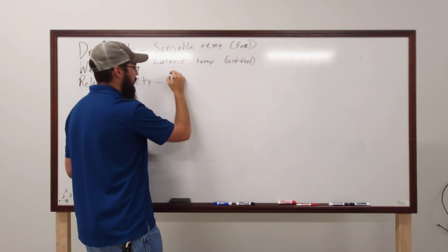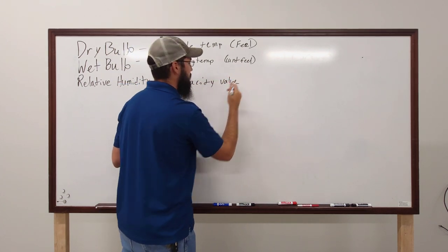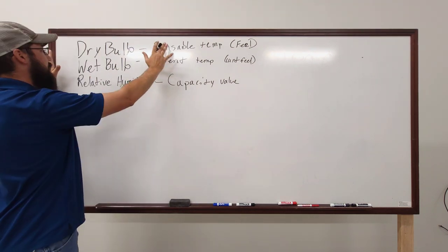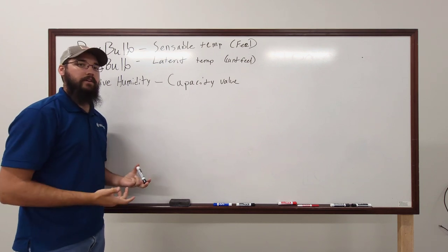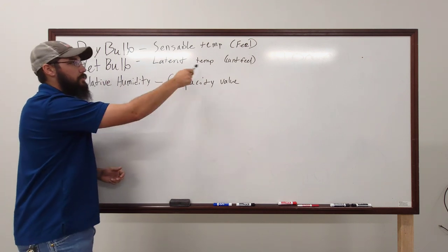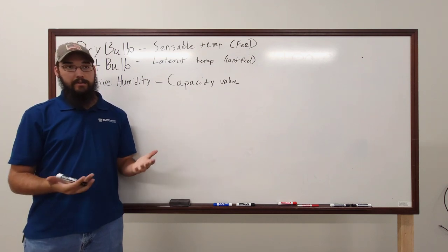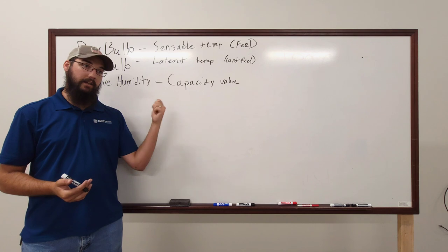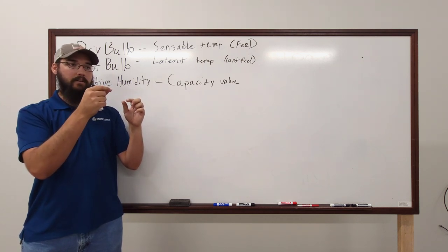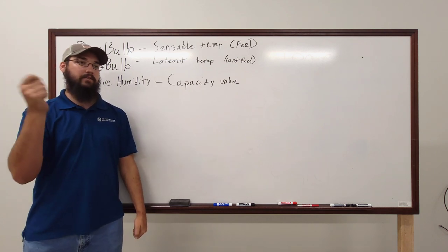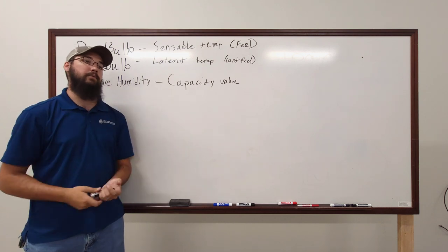Wet bulb and dry bulb are the main focus. You can measure dry bulb by simply sticking a thermometer in the air. For wet bulb, originally they used sling psychrometers — a mercury thermometer with a little cotton sock on it. You'd wet the sock, spin the psychrometer for about five minutes, then read the mercury to get your wet bulb temperature.